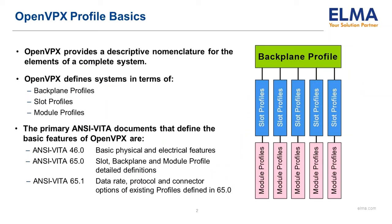ANSI VITA 46 was the first document in the family of standards. It explained the basic features of OpenVPX and details the physical and electrical features of the standard. VITA 65 introduced rules and permissions and described complete backplanes. As the complexity of VITA 65 grew to support higher bandwidths and new signaling protocols and other features such as radio clocks, RF, and optical feed-throughs, VITA 65 kept expanding.